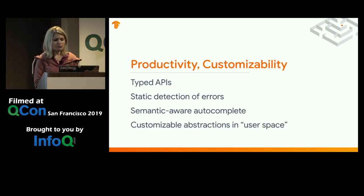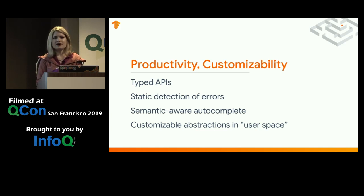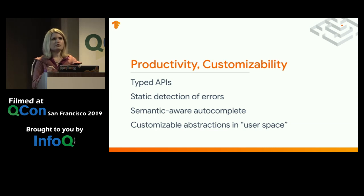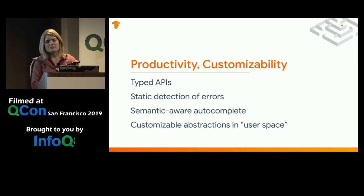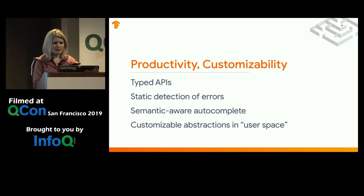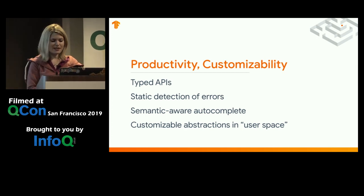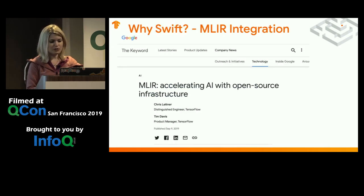Swift also has a focus on productivity and customizability: typed APIs, static detection of errors, and all the nice developer tooling you'd see in C++ world. Semantic-aware autocomplete — which is always a frustration in Python — the ability to follow and trace back files as you're programming, and customizable abstractions in user space. All of these things combined make Swift really nice for developer tooling.